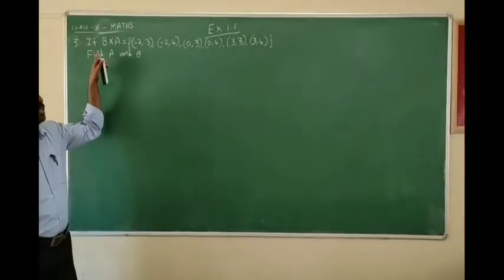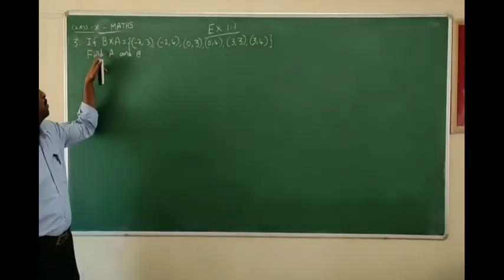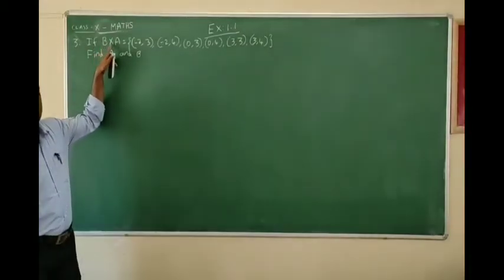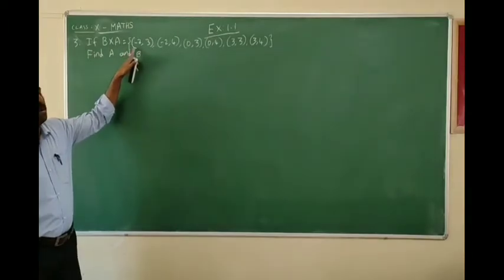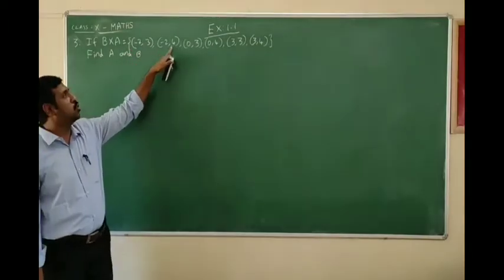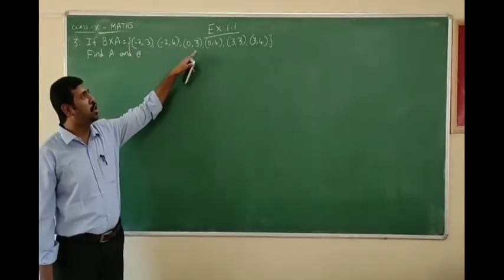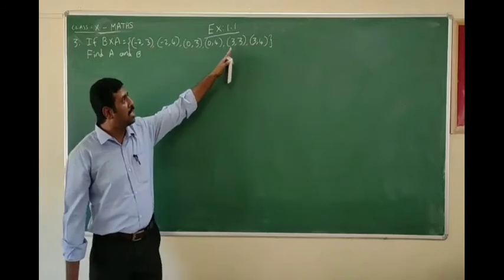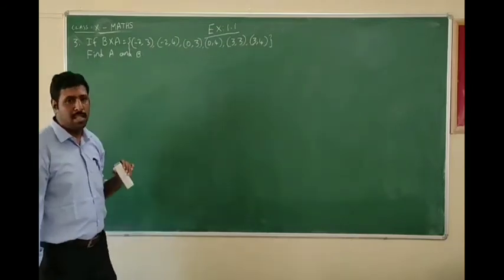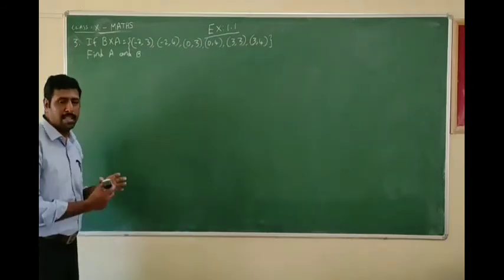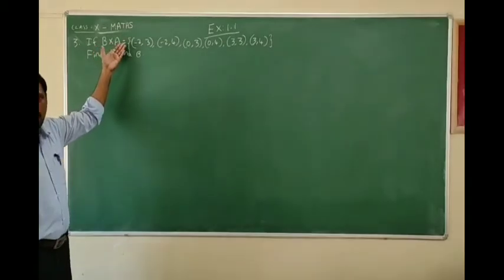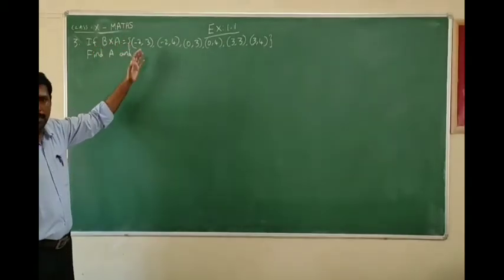This is the third question, number 1.1. B cross A is the order that is given: (-2,3), (-2,4), (0,3), (0,4), (3,3), and (3,4) is the order that is given — B cross A is the order form given.